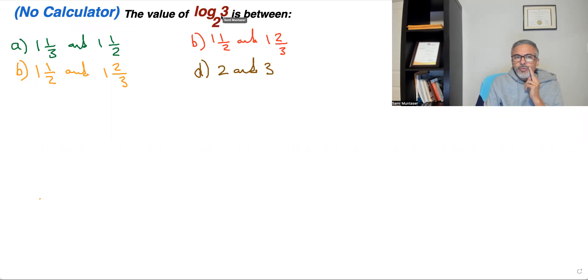So they want you to find log base 2 of 3, but the condition is there is no calculator. So there's no change of base. So how can we do this without a calculator? And this is what I'm going to show you right now.